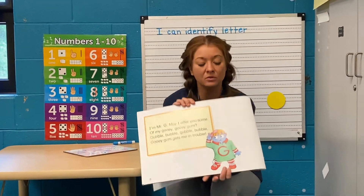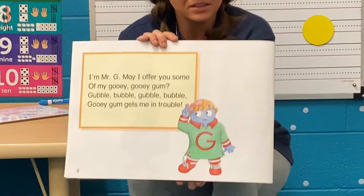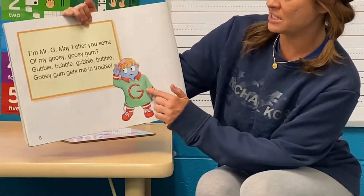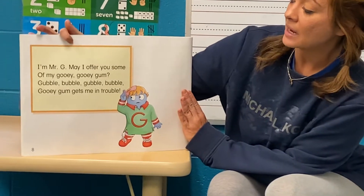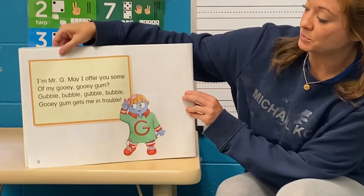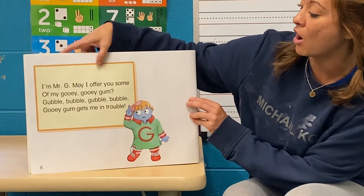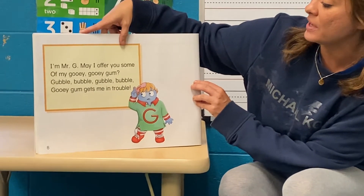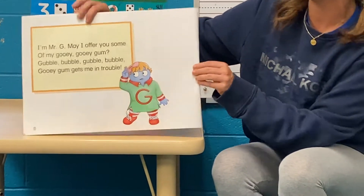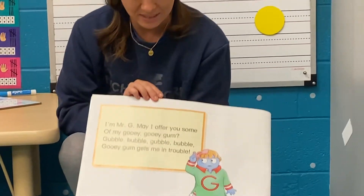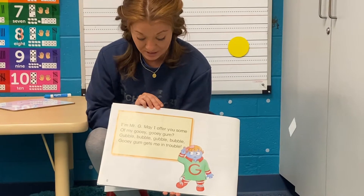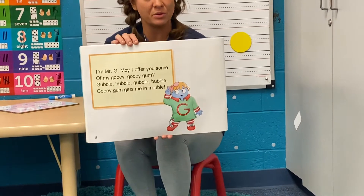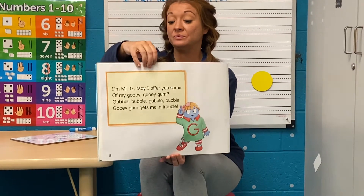Now look at this letter friend — what letter is that? That is letter G, so that is Mr. G! I'm going to read what he's saying: 'I, Mr. G, may I offer you some of my gooey gooey gum? Bubble bubble bubble, gooey gum gets me in trouble.' There were lots of G sounds in there — gooey, gooey gum, gobble gobble — lots of good G words!